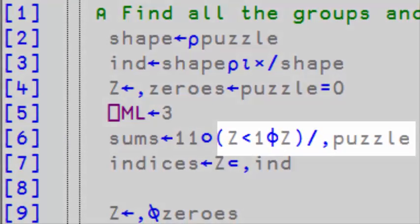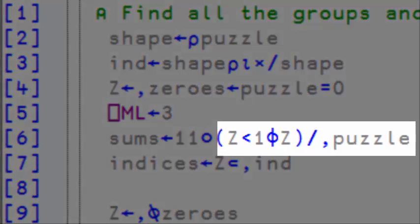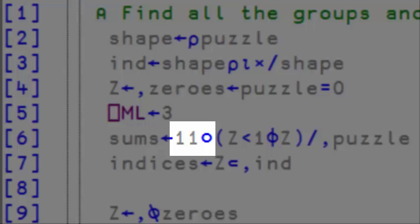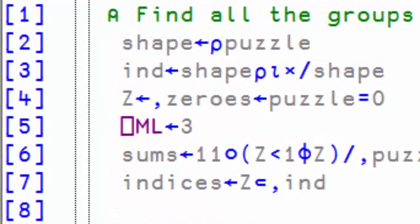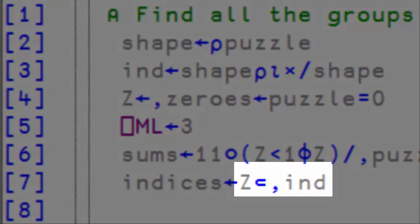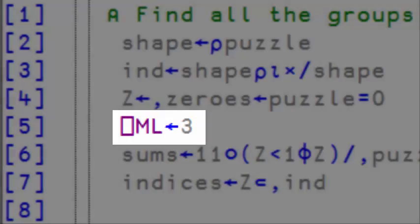This will tell me where the sums are in the puzzle, and by using 11 circle, I can extract the imaginary part, hence the sum, or rather the number I want. To extract the cells' indices, I use partition and close a la APL2 by setting quadML to 3.